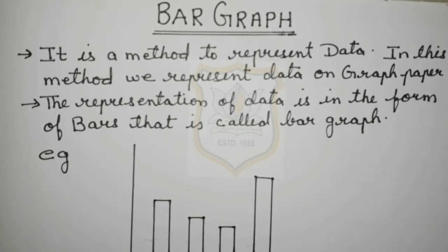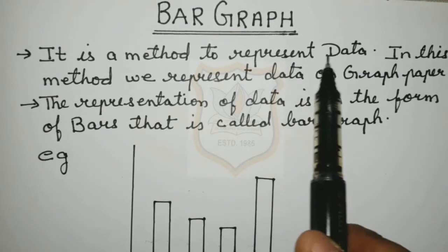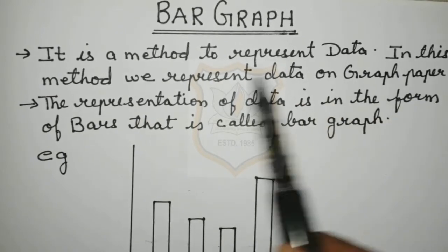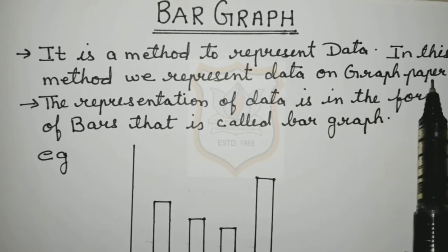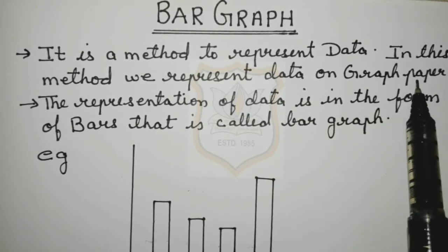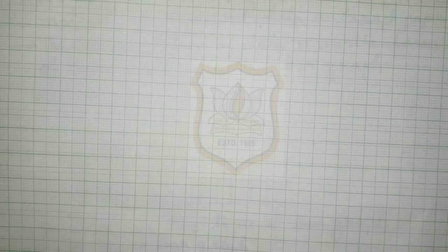Now, what is a bar graph? It is a method to represent data. In this method we represent data on graph paper. Have you seen graph paper? I will show you — this is a graph paper. I think you must have seen this graph paper in your previous classes also. We will draw the bar graph on this graph paper.